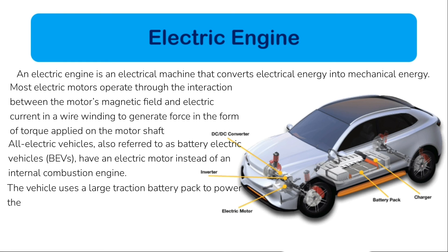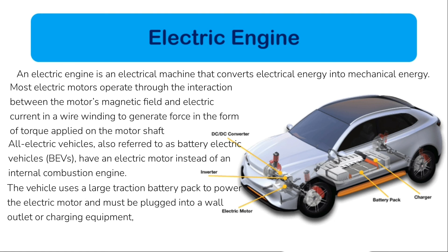The vehicle uses a large traction battery pack to power the electric motor and must be plugged into a wall outlet or charging equipment, also called electric vehicle supply equipment. Because it runs on electricity, the vehicle emits no exhaust from a tailpipe and does not contain typical liquid fuel components such as a fuel pump, fuel line, or fuel tank.